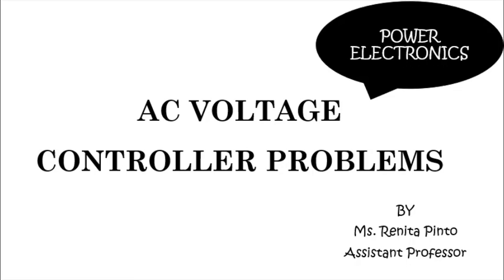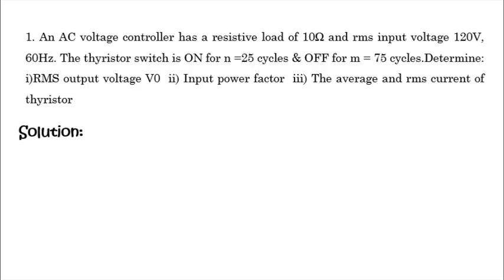Hello students, today we will be going through AC voltage controller problems. The first problem: an AC voltage controller has a resistive load of 10 ohms and RMS input voltage 120 volts, 60 hertz. The thyristor switch is on for N equal to 25 cycles and off for M equal to 75 cycles. Determine RMS output voltage, input power factor, and average and RMS current of the thyristor.